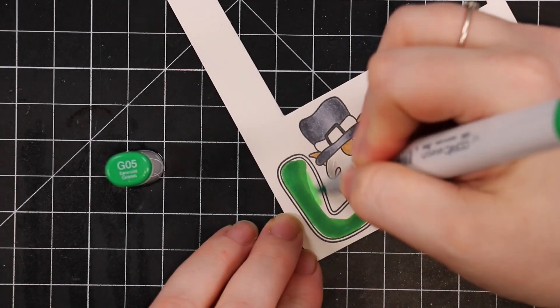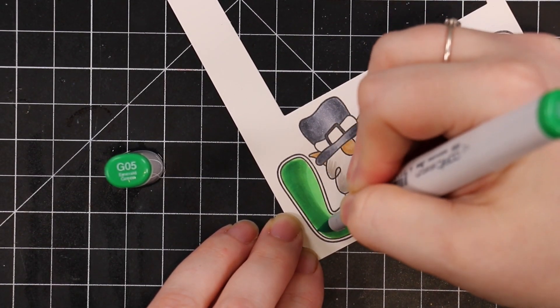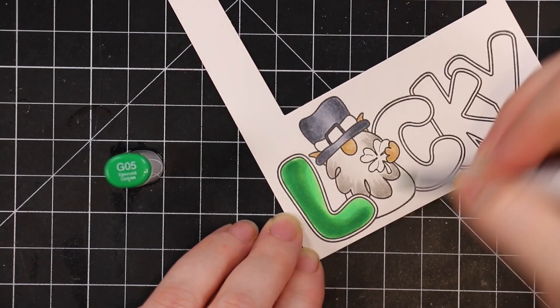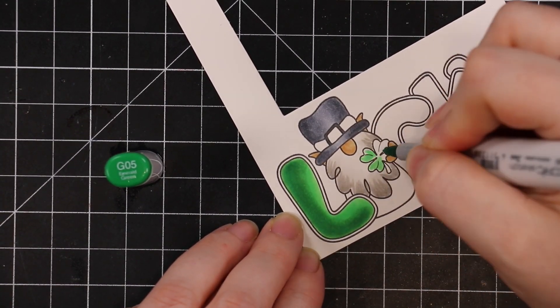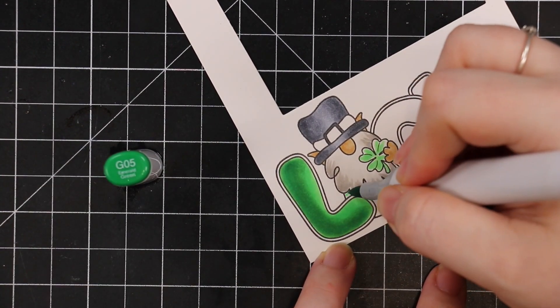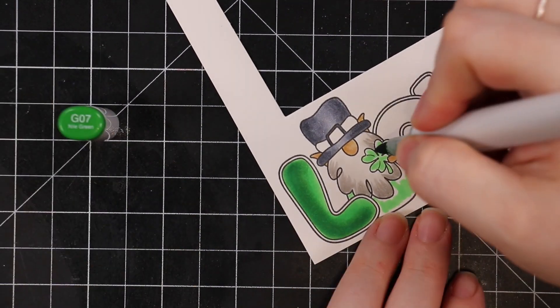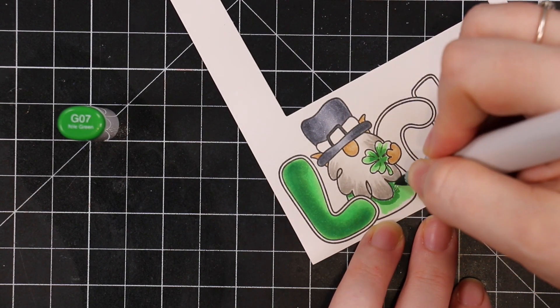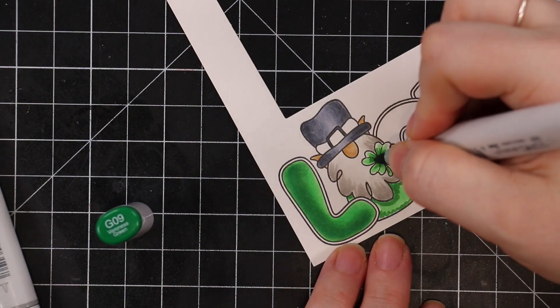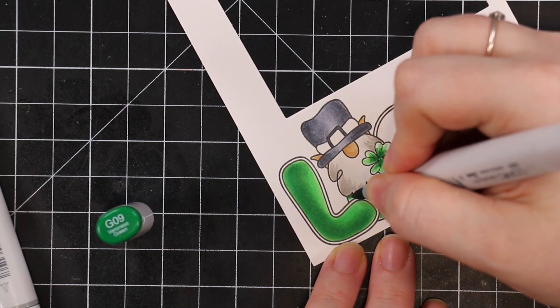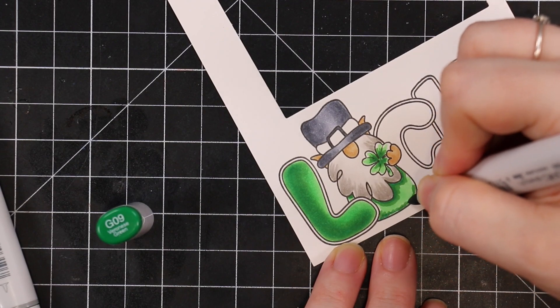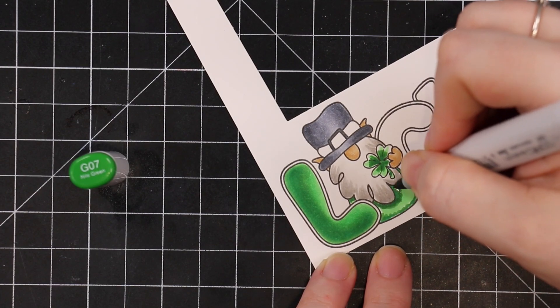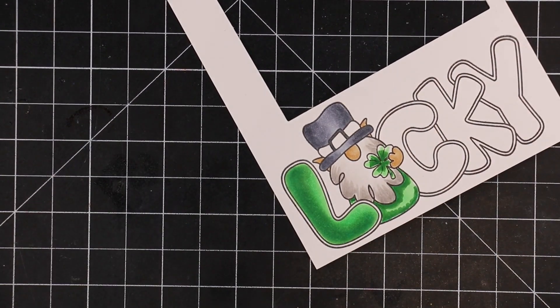With the letters, I did them all the same, so I'm not going to show all of that. With his outfit, I went lightest to darkest. You can achieve the same look either way, but it's just personal preference. I did the little clover with the same greens as well.